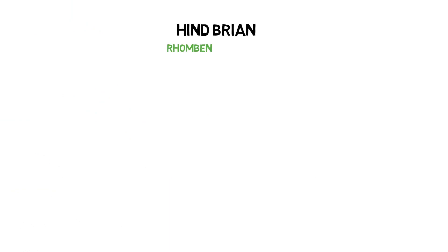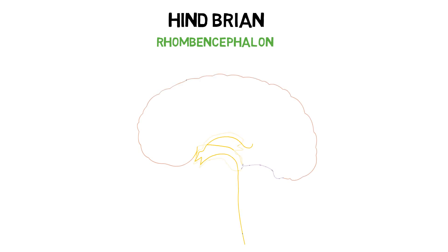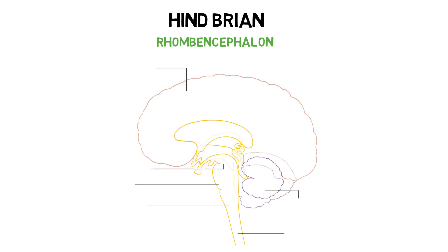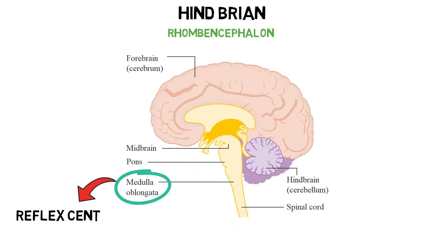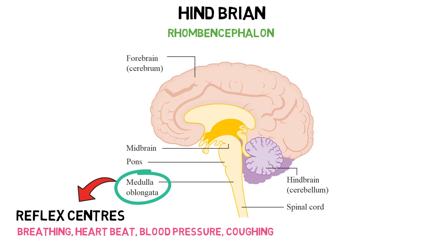The last part of the brain is the hindbrain, also called rhombencephalon. The hindbrain consists of medulla oblongata, cerebellum, pons and reticular formation. The medulla oblongata has reflex centers for vital tasks like breathing, heartbeat, blood pressure, coughing, swallowing, hiccuping, sneezing and vomiting.